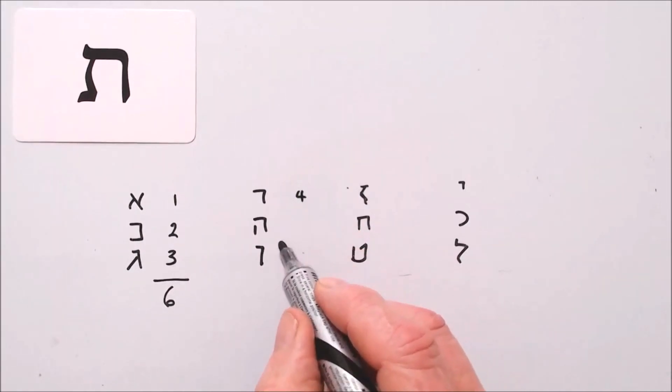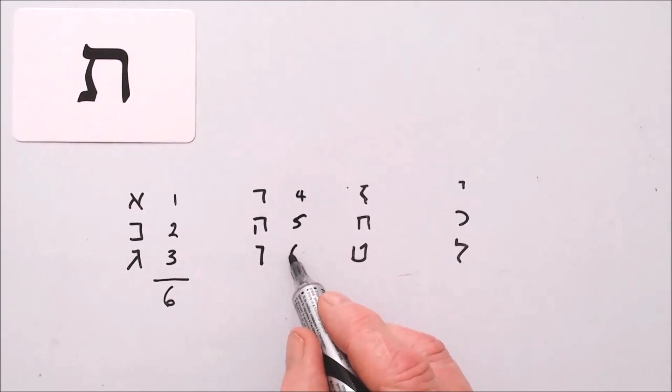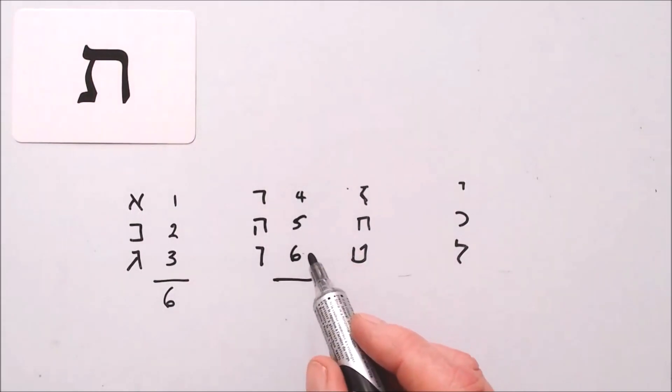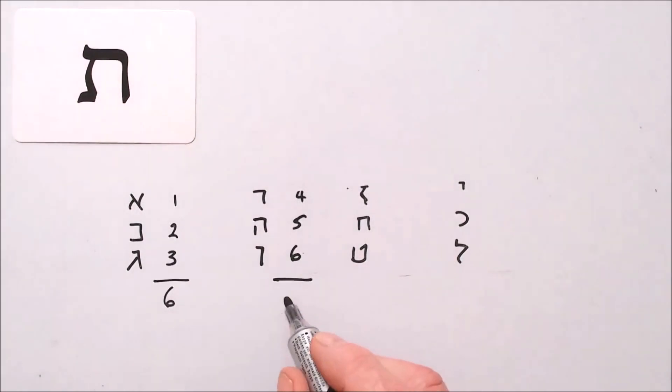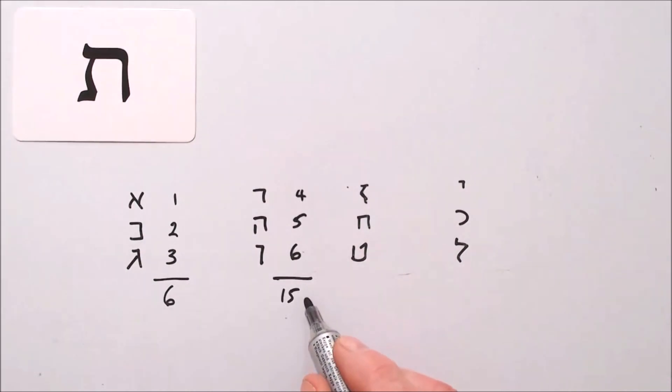Dalit is four, He is five, Vav is six. Add them up. Four plus five is nine, plus six is fifteen. To get the digit sum, we add five and one, six.